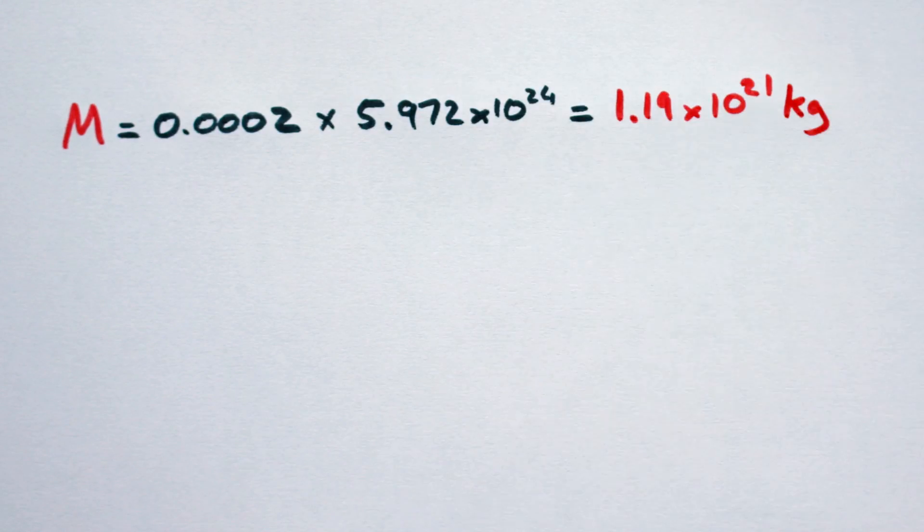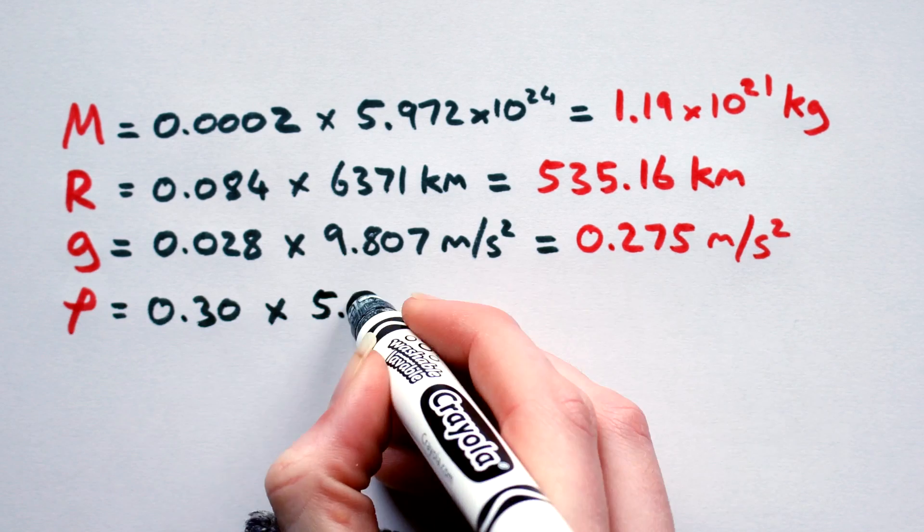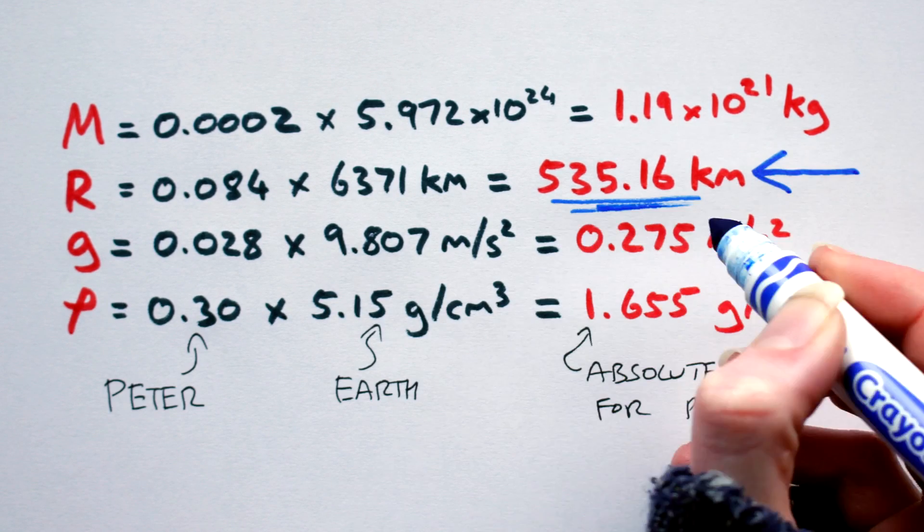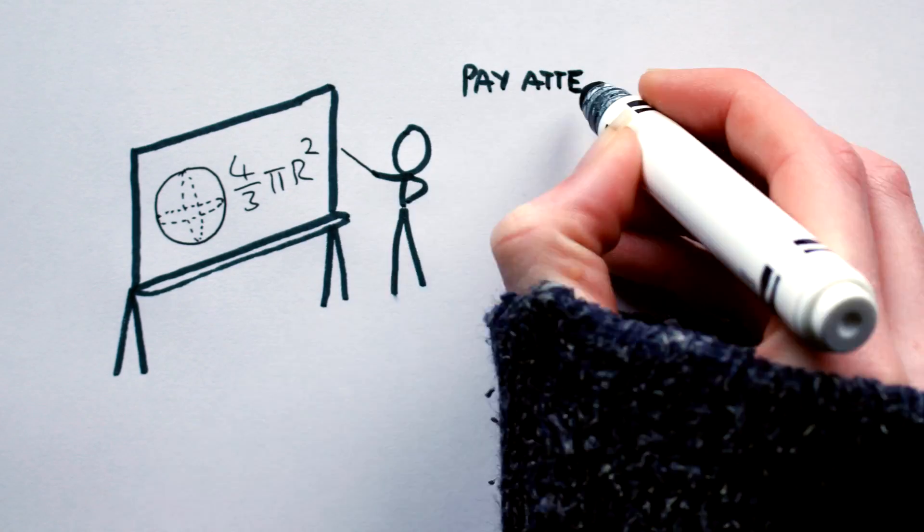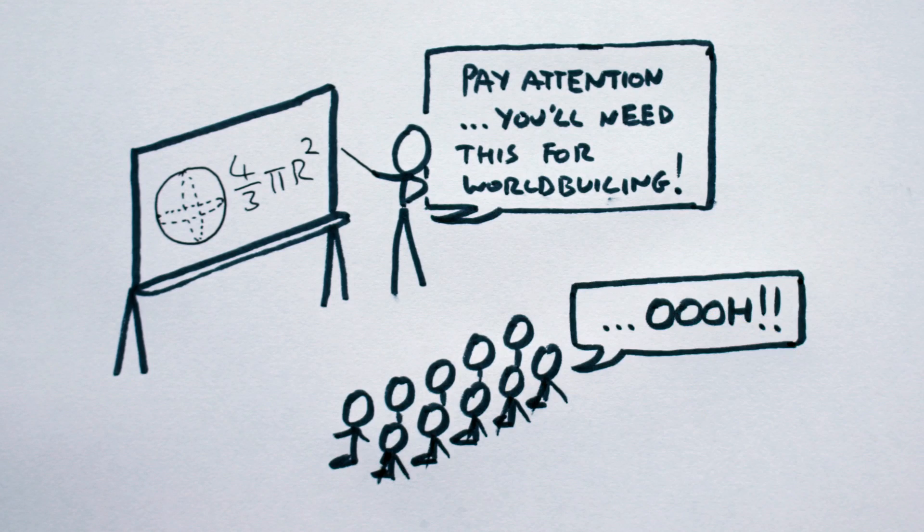So I think now's a good time to take all our previous values and multiply them by their respective values on Earth, which will give us a nice set of absolute values. From here, we can take the absolute value of our planet's radius and use the basic geometry we all learned in school, and haven't forgotten, to figure out Peter's circumference, surface area, and volume.